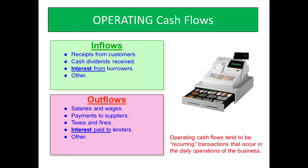I want you to notice: if you receive interest or pay interest, that is an operating cash flow. That's why I was specific on the previous slides to say paying principal or collecting principal — because if you receive interest or pay interest, it is an operating cash flow. If you receive dividends, it is an operating cash flow. If you pay dividends, it's a financing activity. Receipts from customers, salaries and wages, taxes and fines, payments to suppliers — those are all operating cash flows that occur in the daily operations.